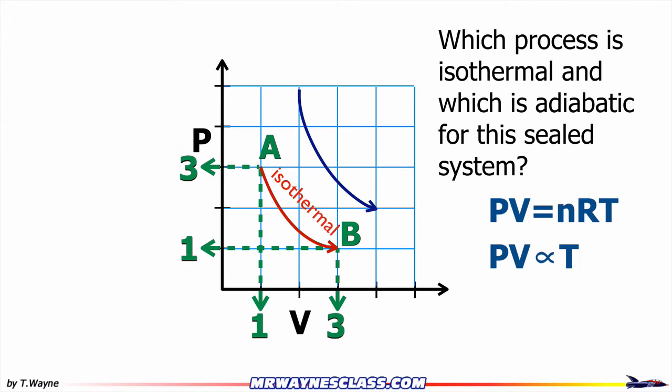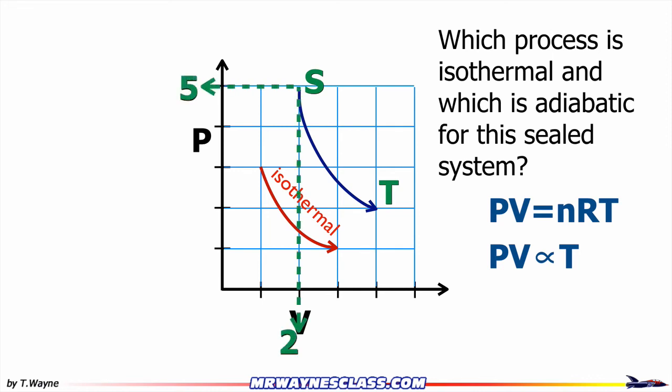But let's check the blue curve to make sure. I'm going to look at the ends of the blue curve and label them S and T. So at S, that's a pressure of 5 and a volume of 2, and at T, that's going to be a pressure of 2 and volume of 4. So 5 times 2 is 10 at the S position, and 2 times 4 is 8 at the T position.